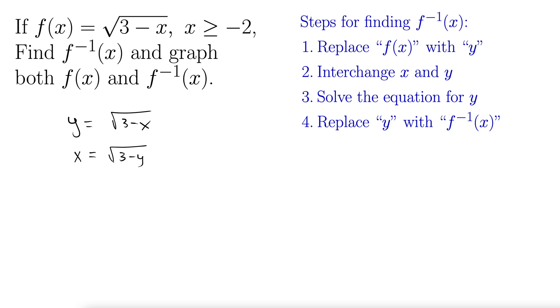So x equals square root of 3 minus y. Now we solve for y, so I'll square both sides. x squared equals 3 minus y. I can add y to both sides and subtract x squared. That gives us y equals 3 minus x squared.